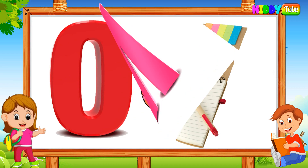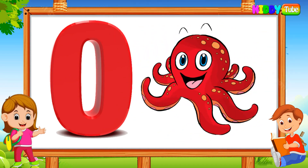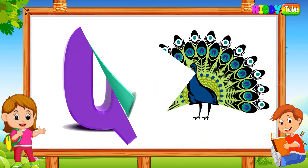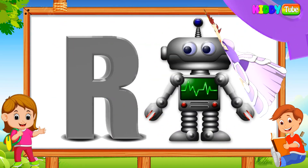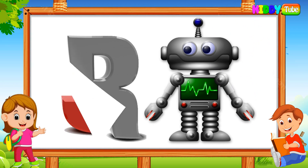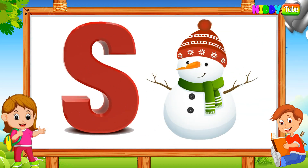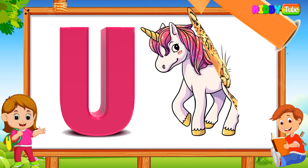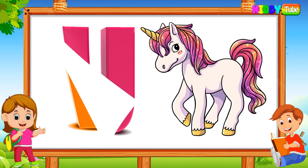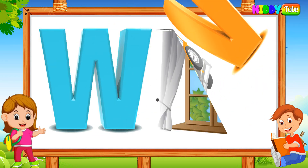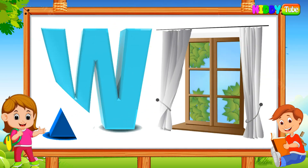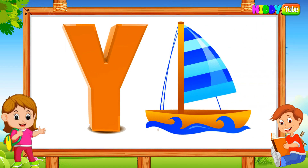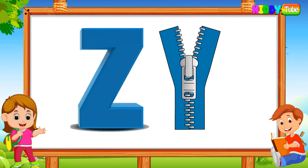N for notebook, O for octopus, P for peacock, Q for queen, R for robot, S for snowman, T for tiger, U for unicorn, V for van, W for window, X for x-ray, Y for yacht, Z for zipper.